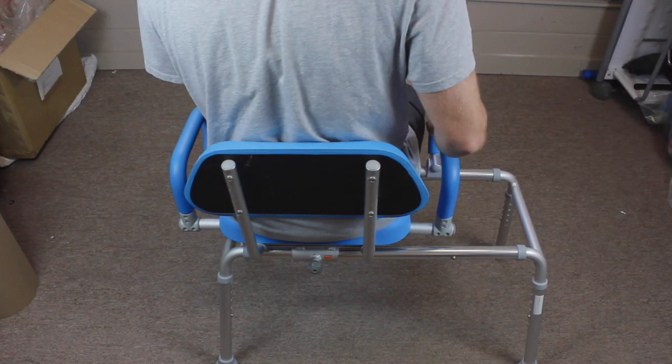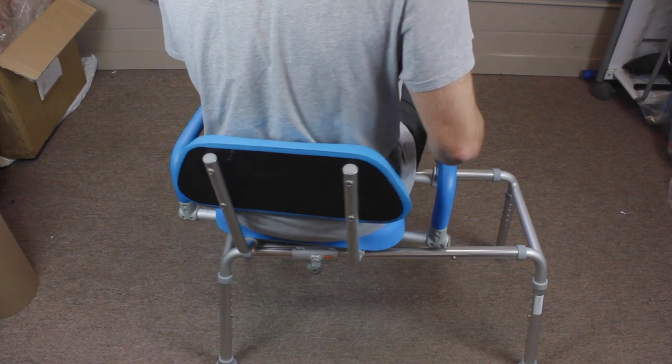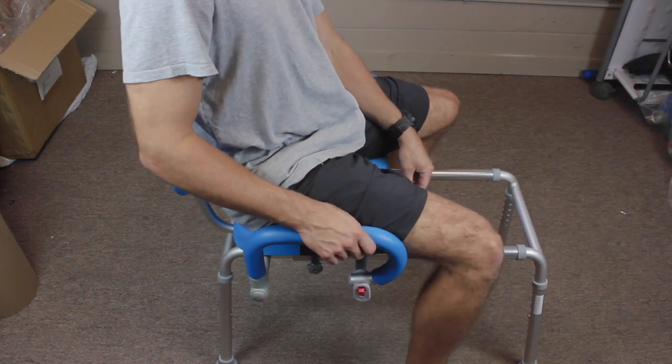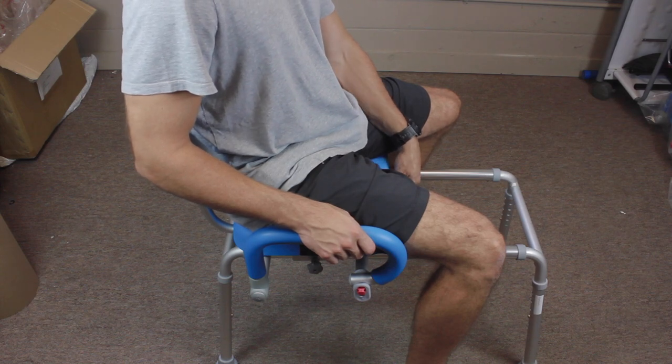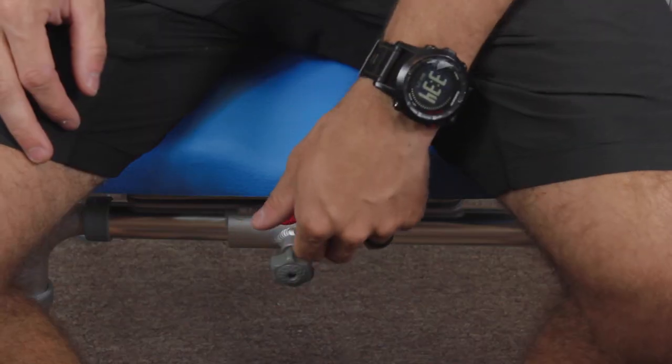When seated and strapped in, you'll want to make sure the chair is locked in either the far left or far right position. Push the red tab to engage the swivel function and slide the chair around the 360 degree axis, locking every 90 degrees.